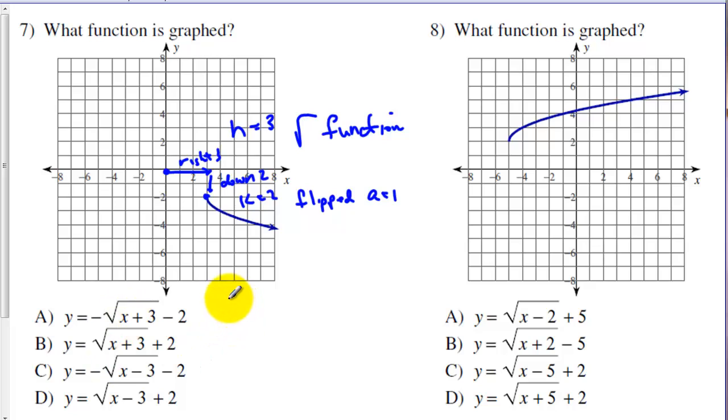So we know h equals 3 and k equals 2. So we could, even though it's not multiple choice, we could write our function here as negative square root of x minus 3. And then down 2 would be minus 2. So we've got this function right here, number c.